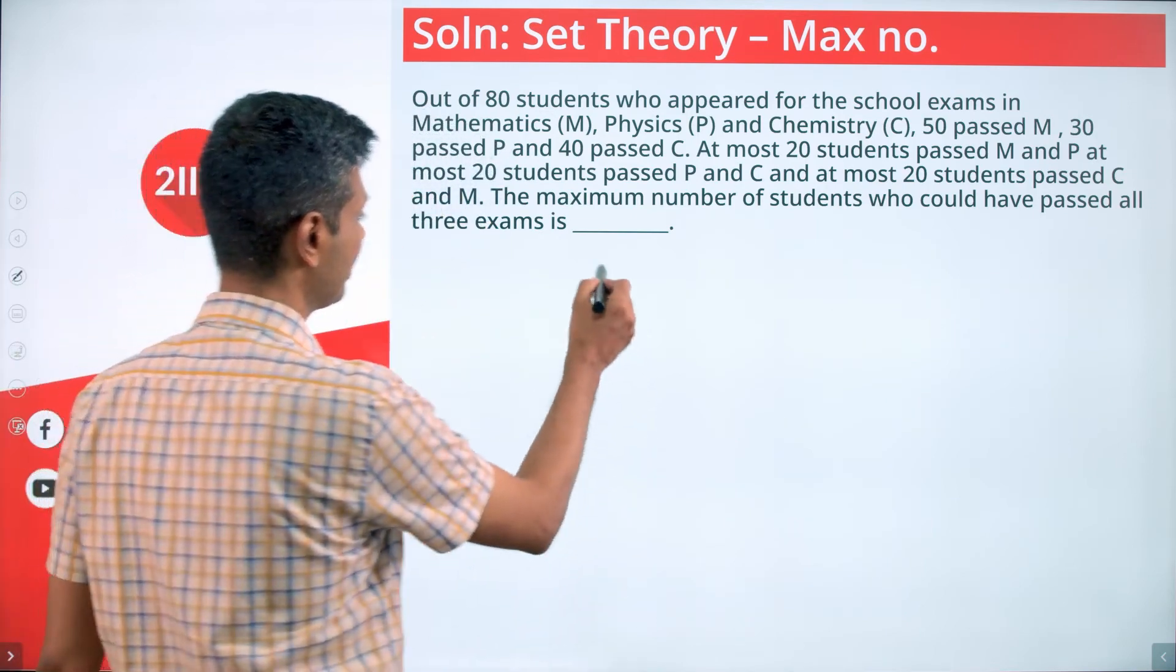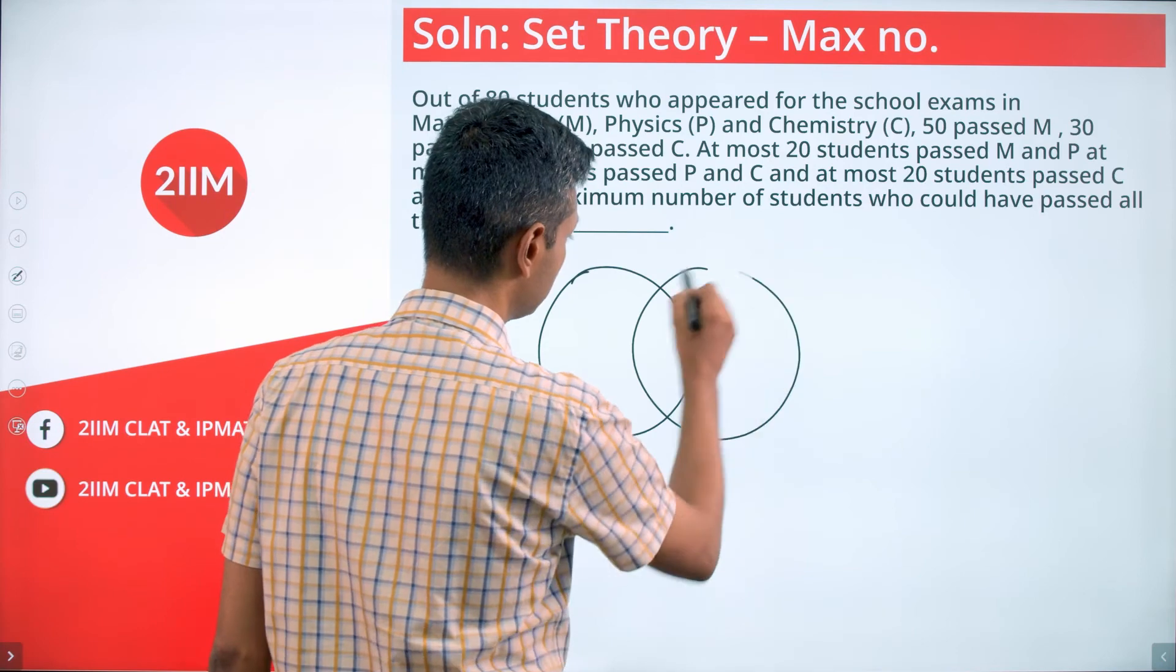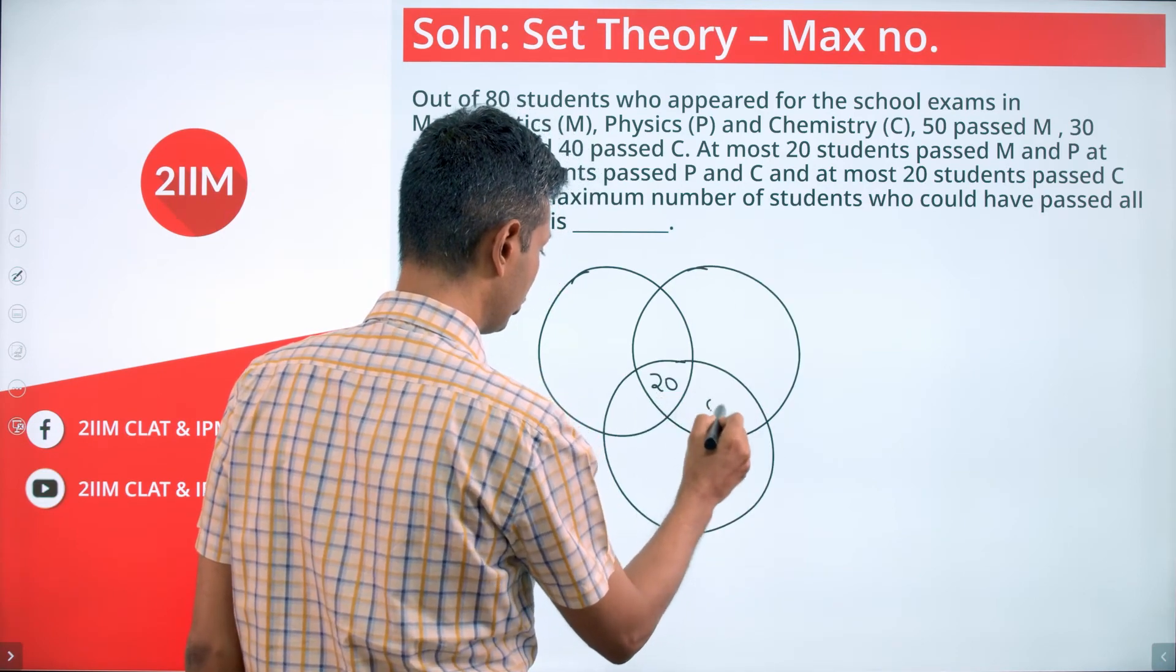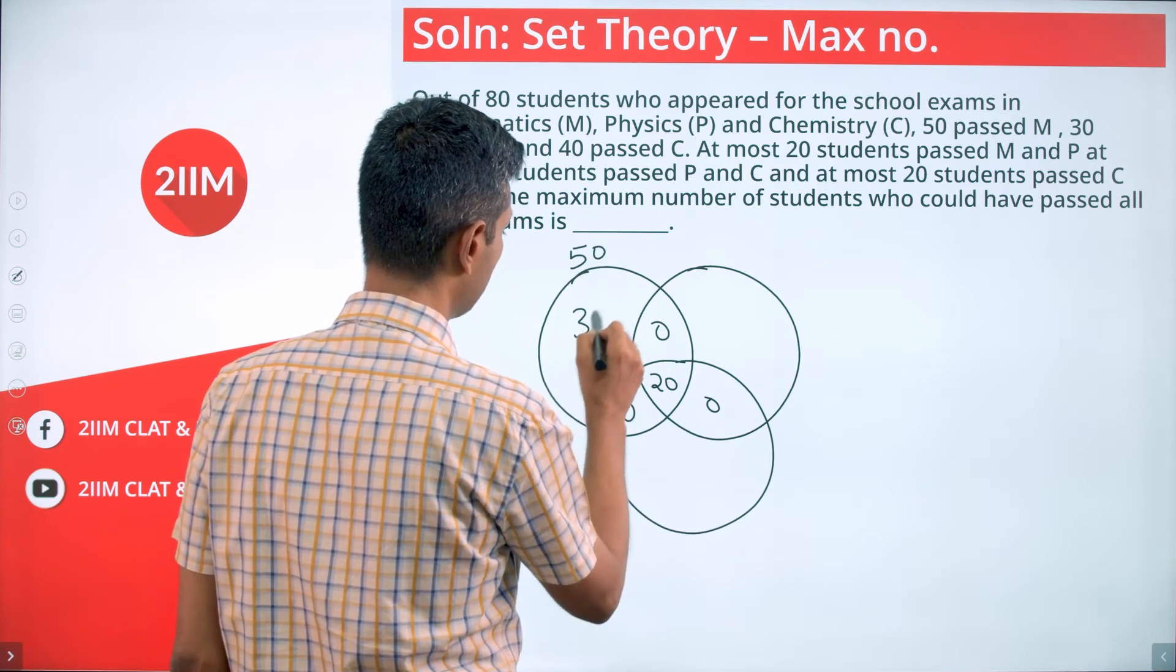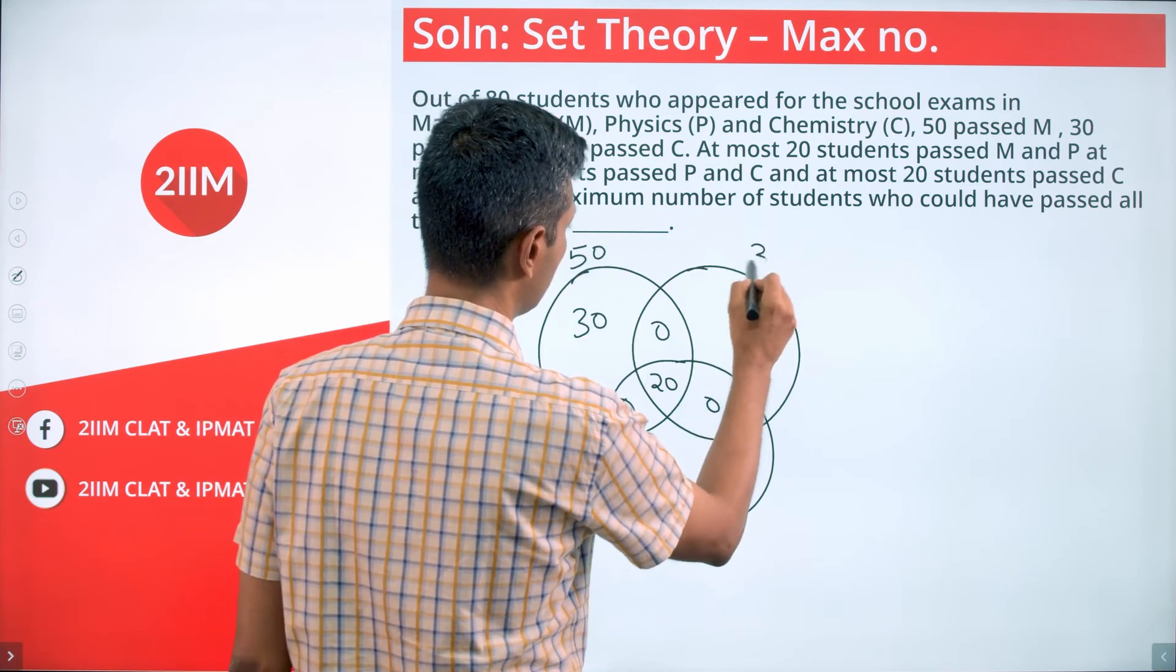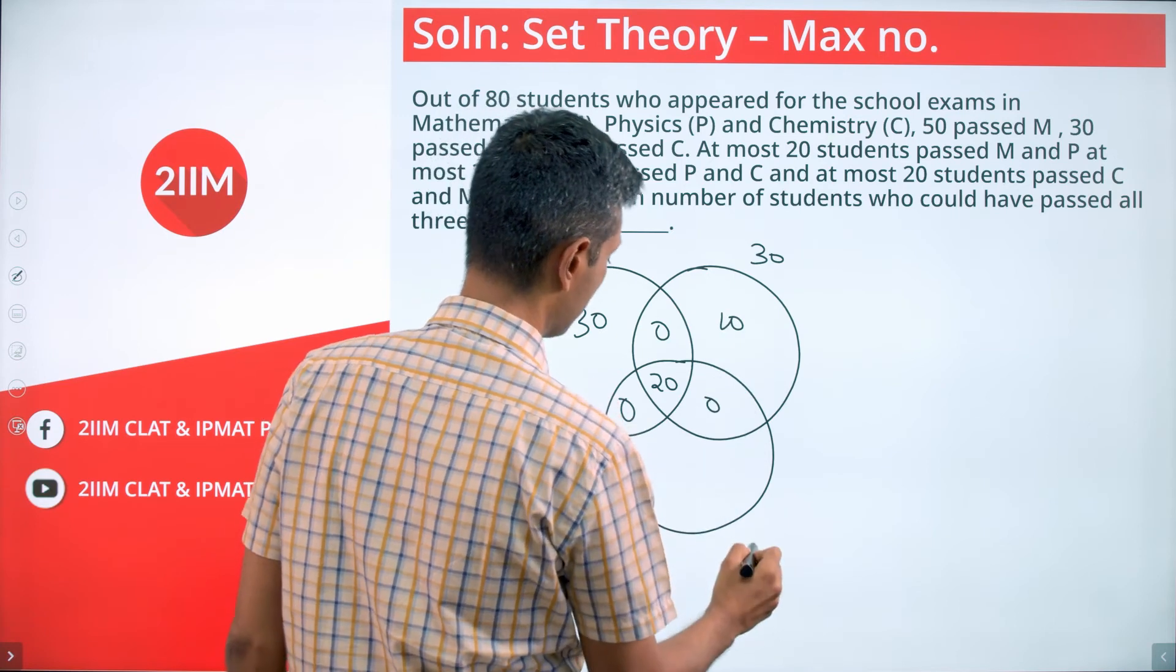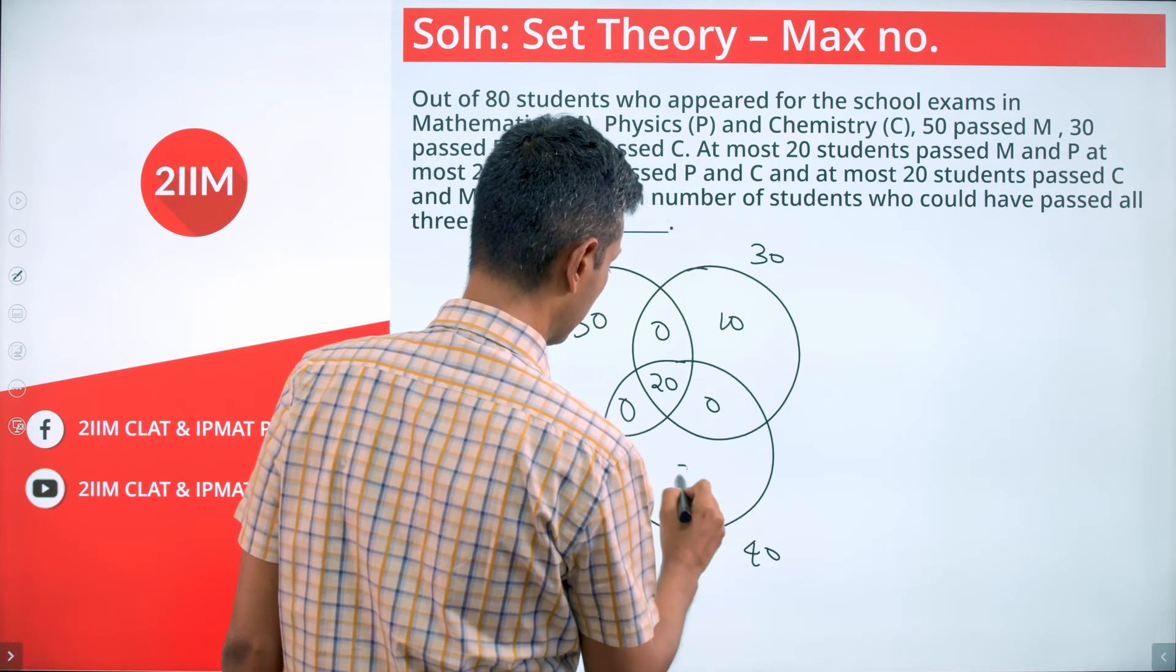Clearly 20 here. I mean, this is zero, zero, zero. Math total is 50, so it'll be 30 people here. Physics total is 30, there should be 10 people here. Chemistry total is 40, there should be 20 here.